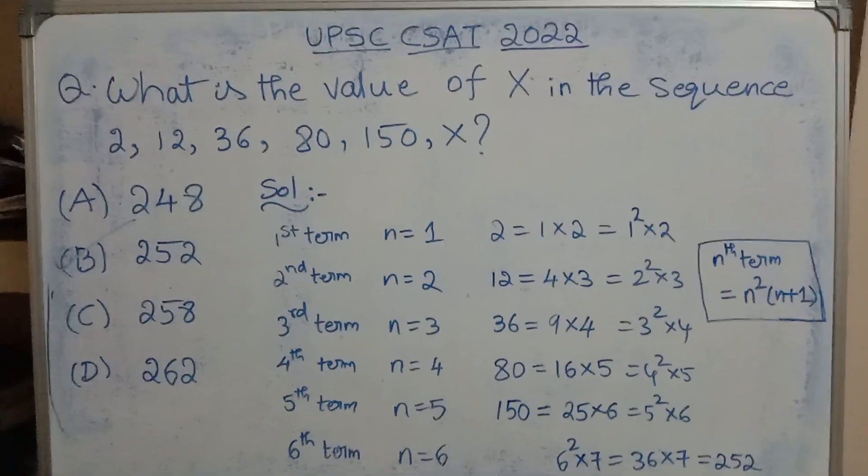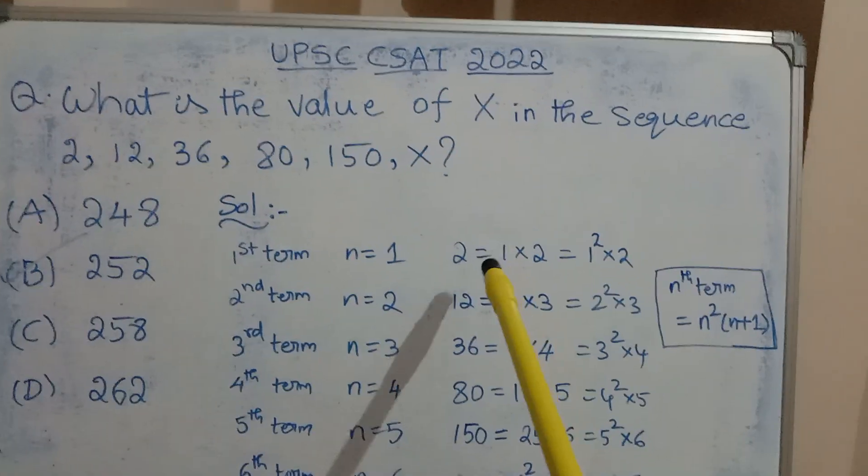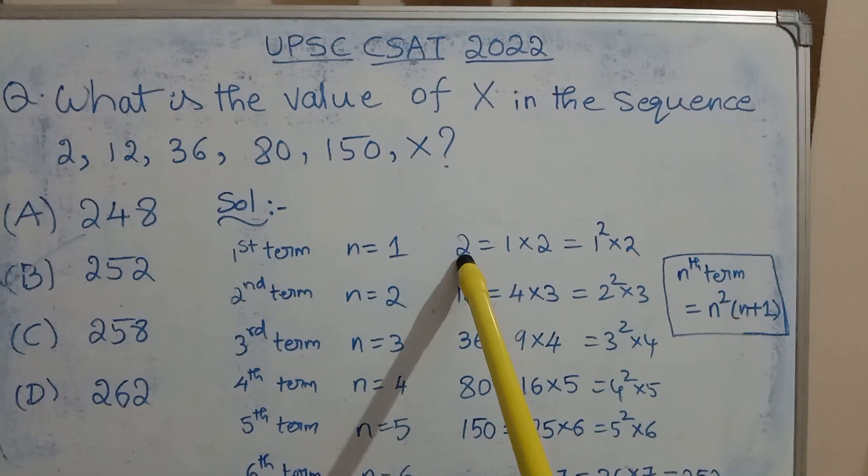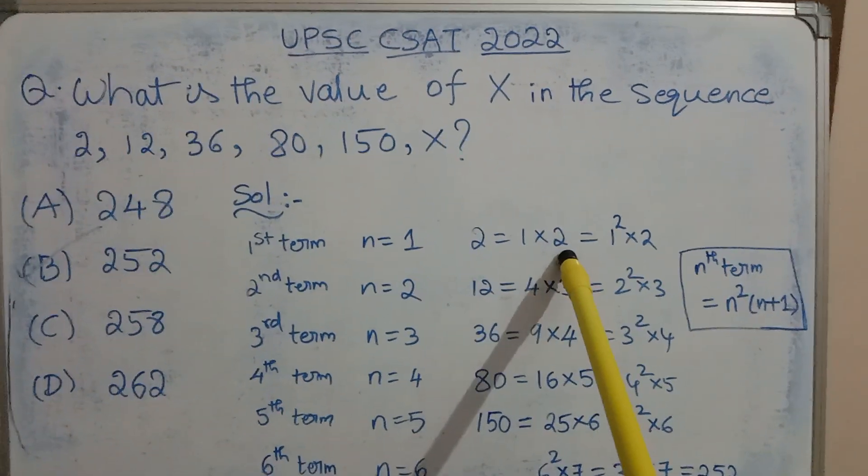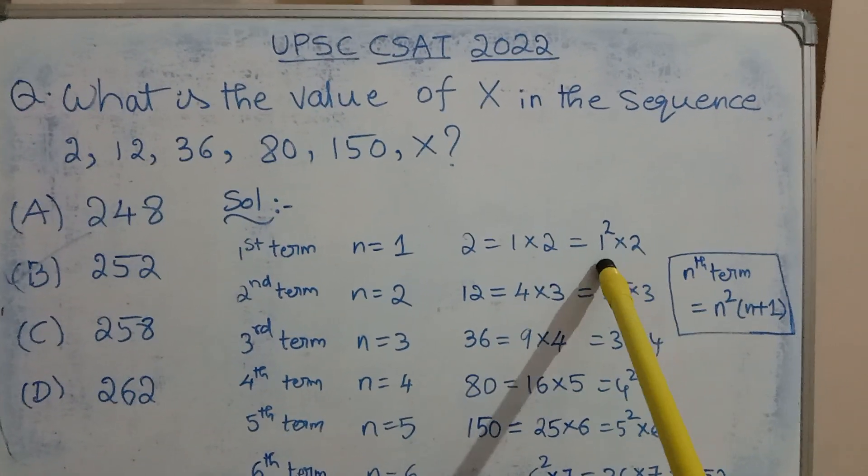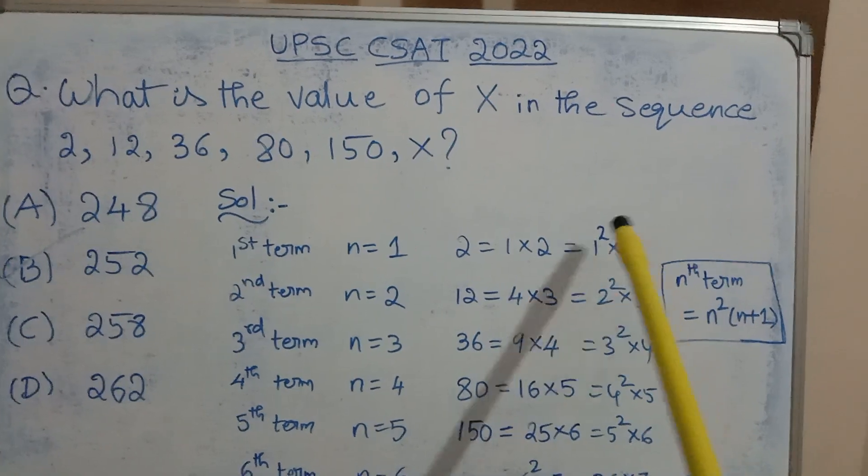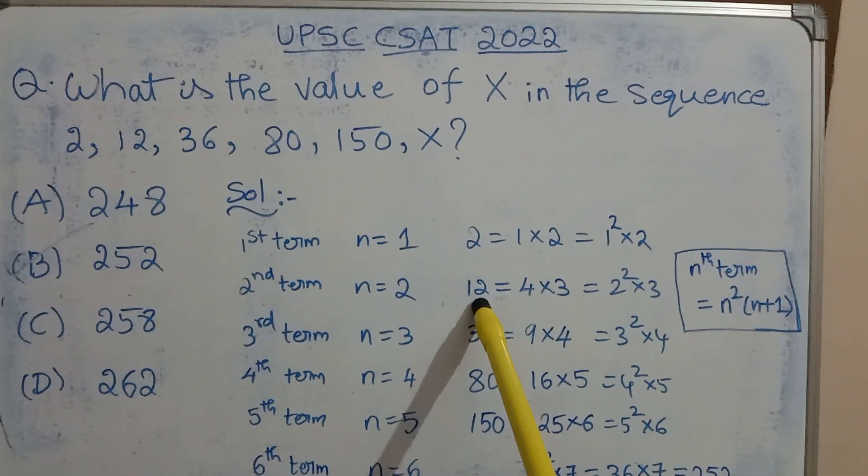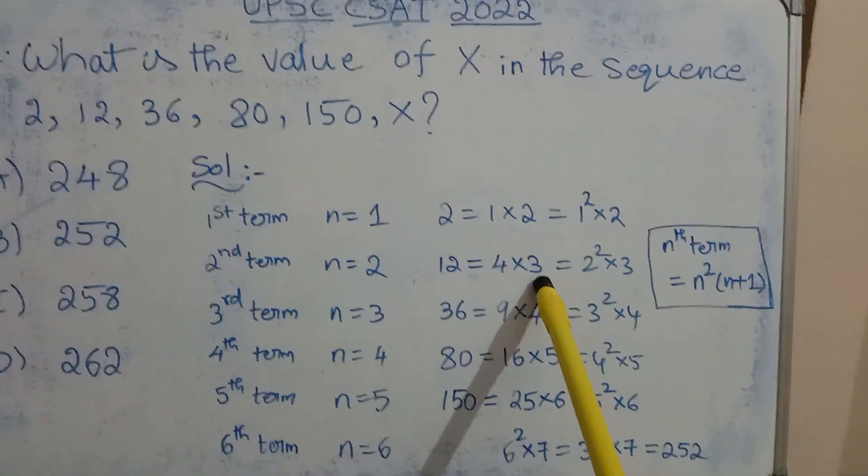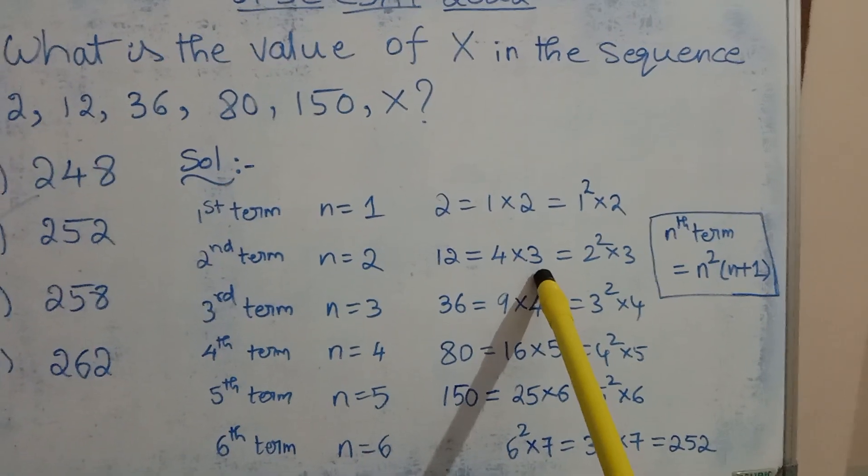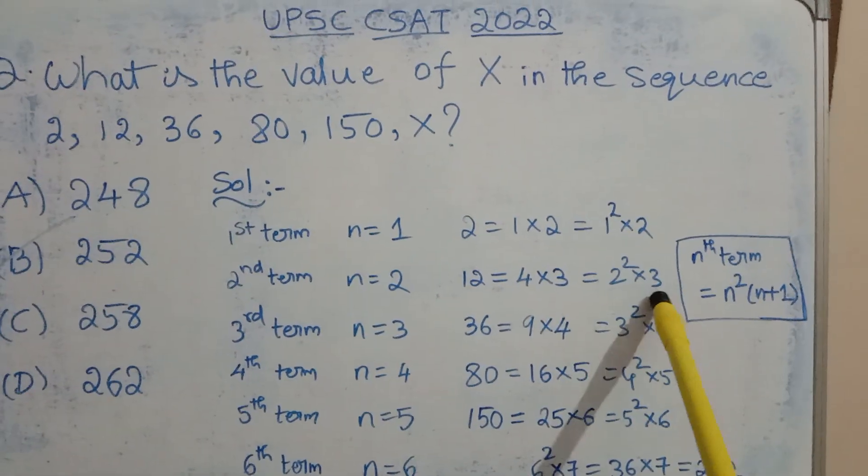So the first term is 2 which can be written as 1 x 2 which is 1 square x 2. 12 can be written as 4 x 3 which can be written as 2 square x 3.